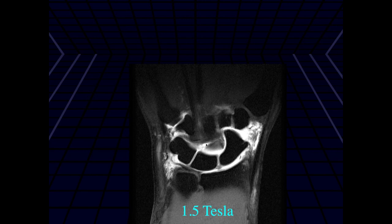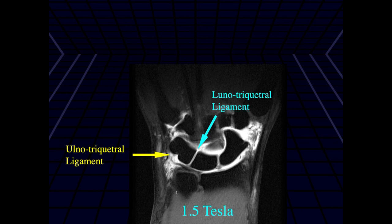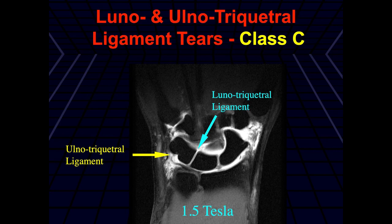On this single image, we have a lot of irregularity and soft tissue edema along the peripheral aspect of the TFCC. I'm concerned about the extensor carpal nerve — I would want to further evaluate that on the axial images as well as the TFCC attachments. This ended up having ulnotriquetral and lunotriquetral tears, and was surgically a class C lesion with a peripheral tear.